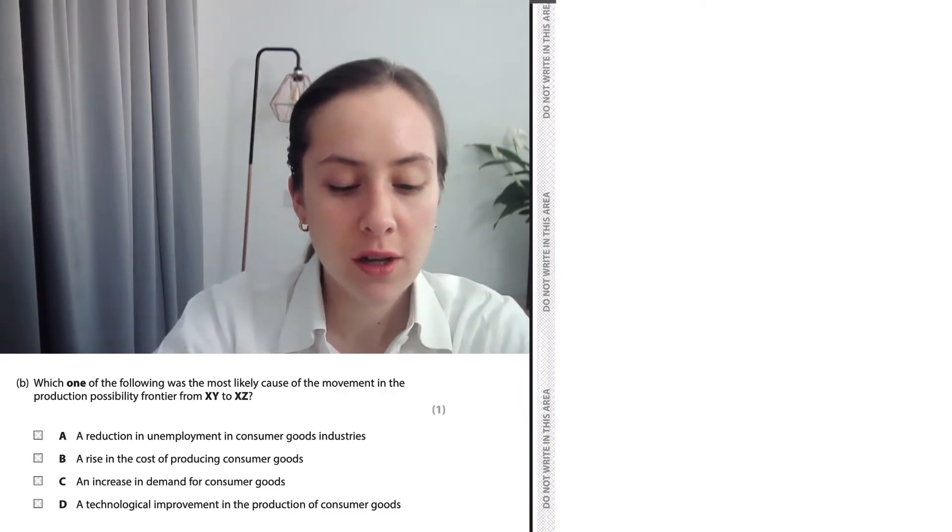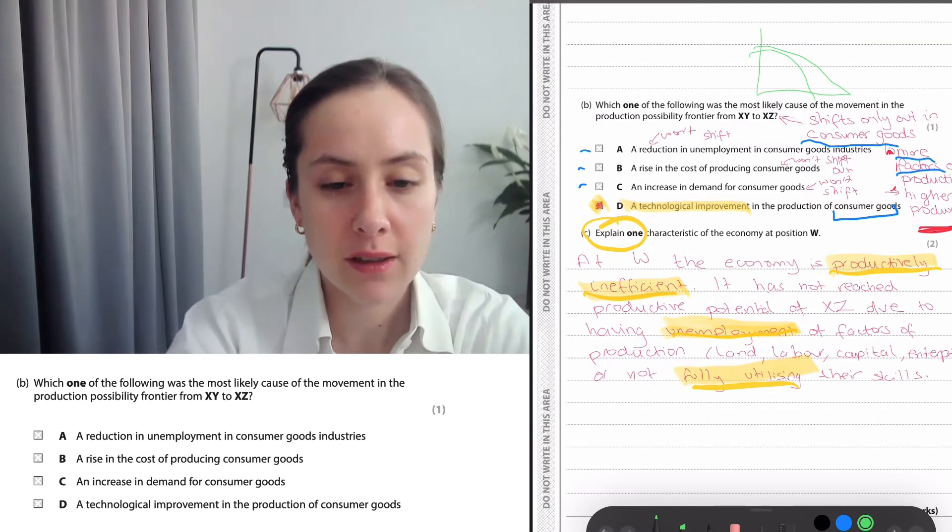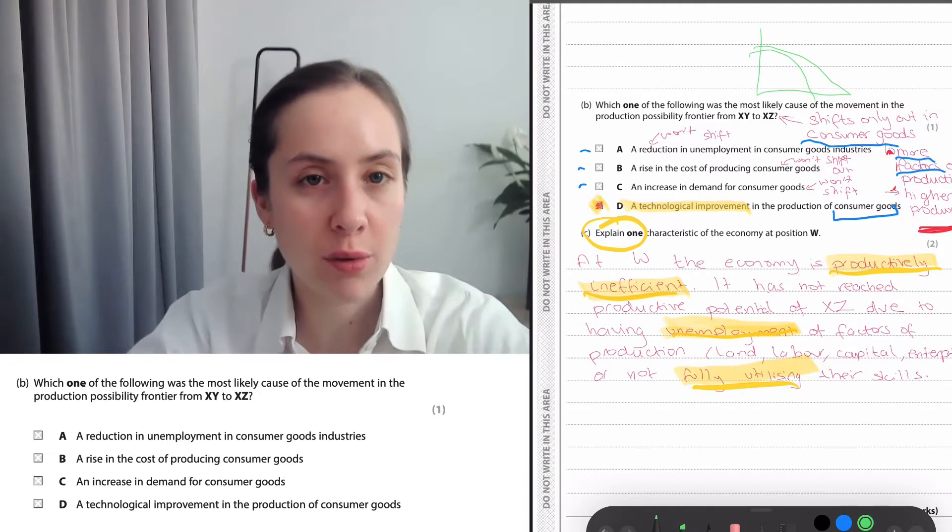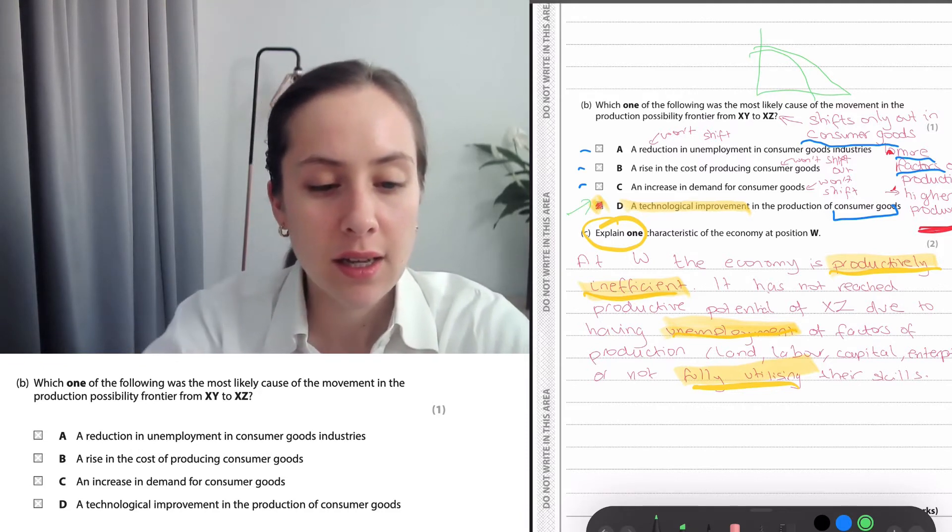So to shift your PPF, to shift it like this, you want more factors of production or you want a higher productivity, better technology, and you can see that D is the answer with that. The other ones won't really shift or be a movement inside.